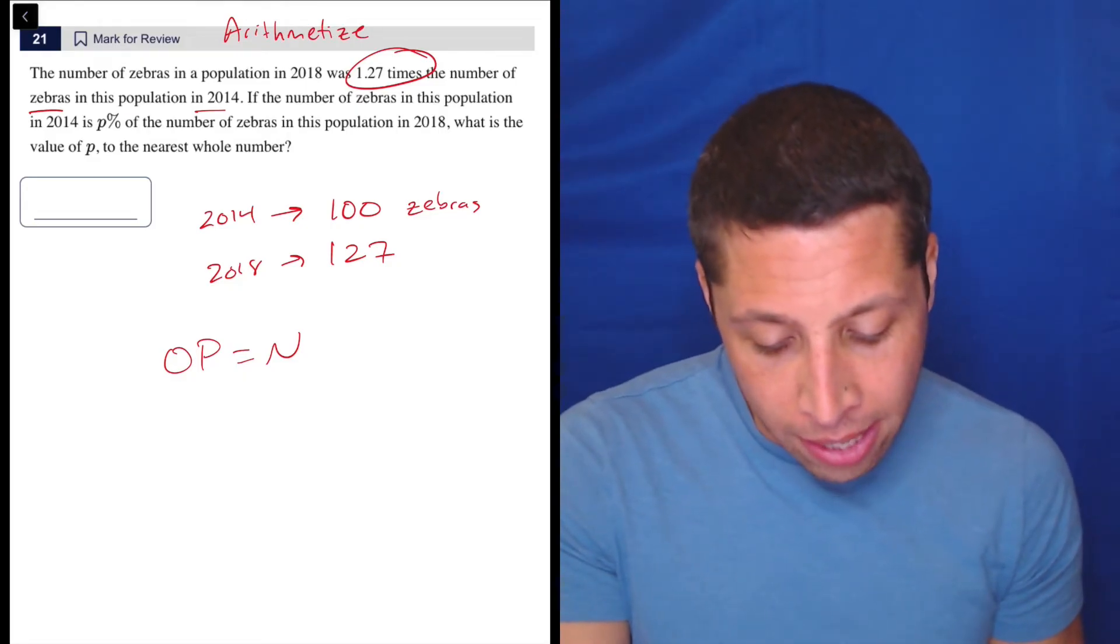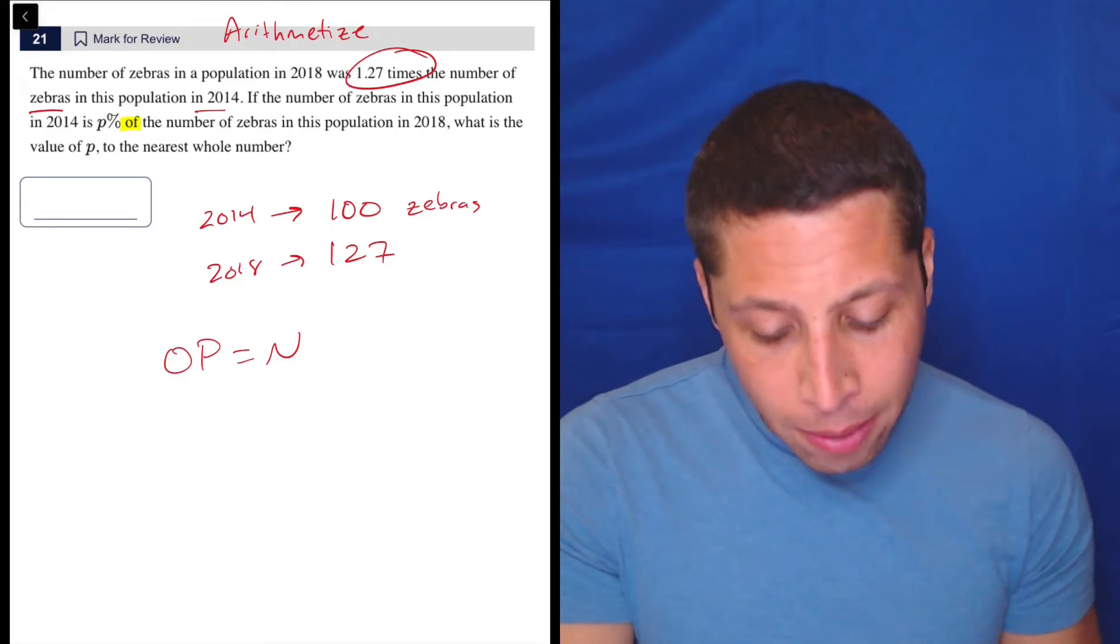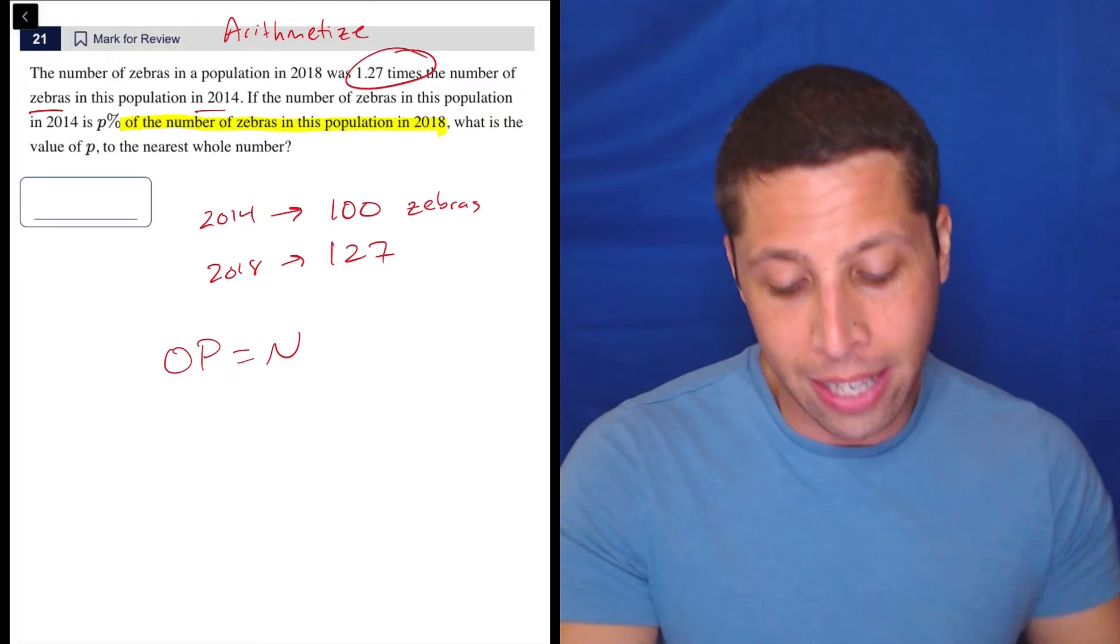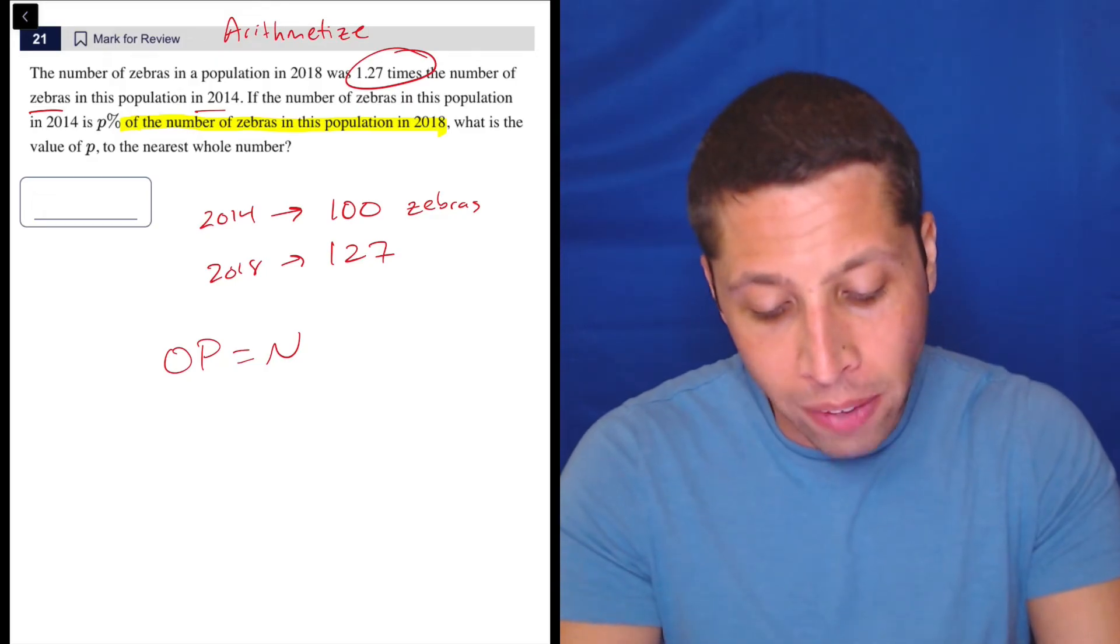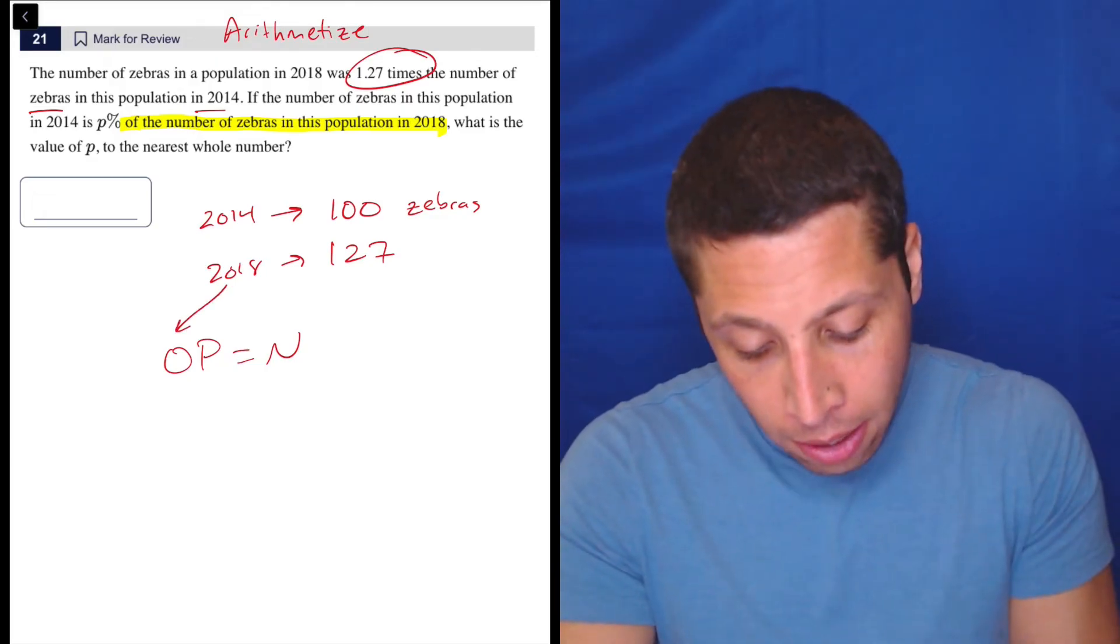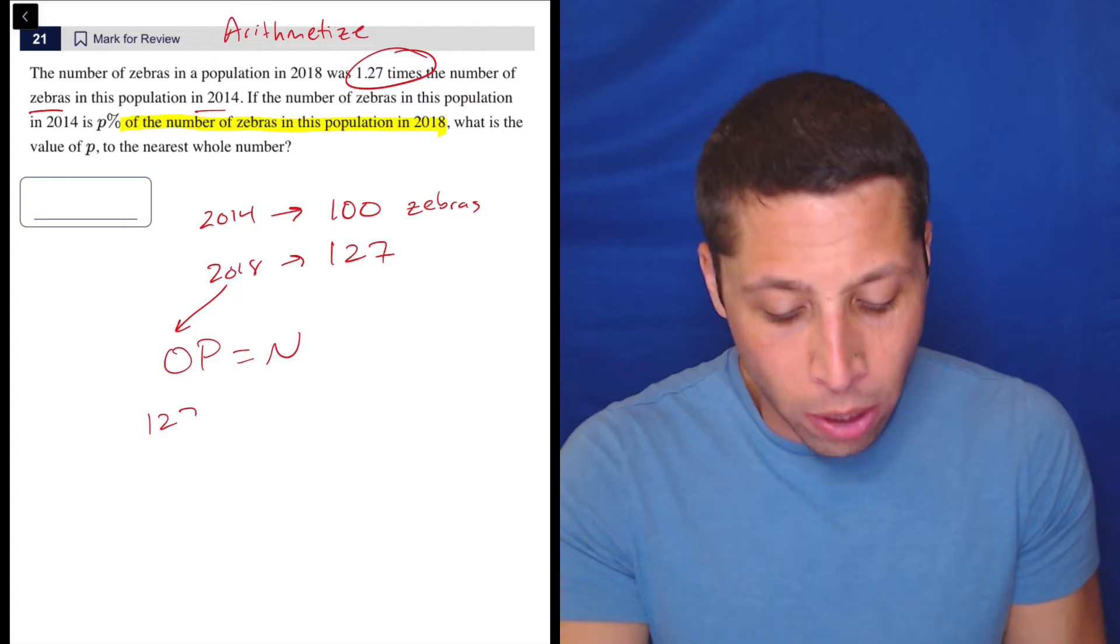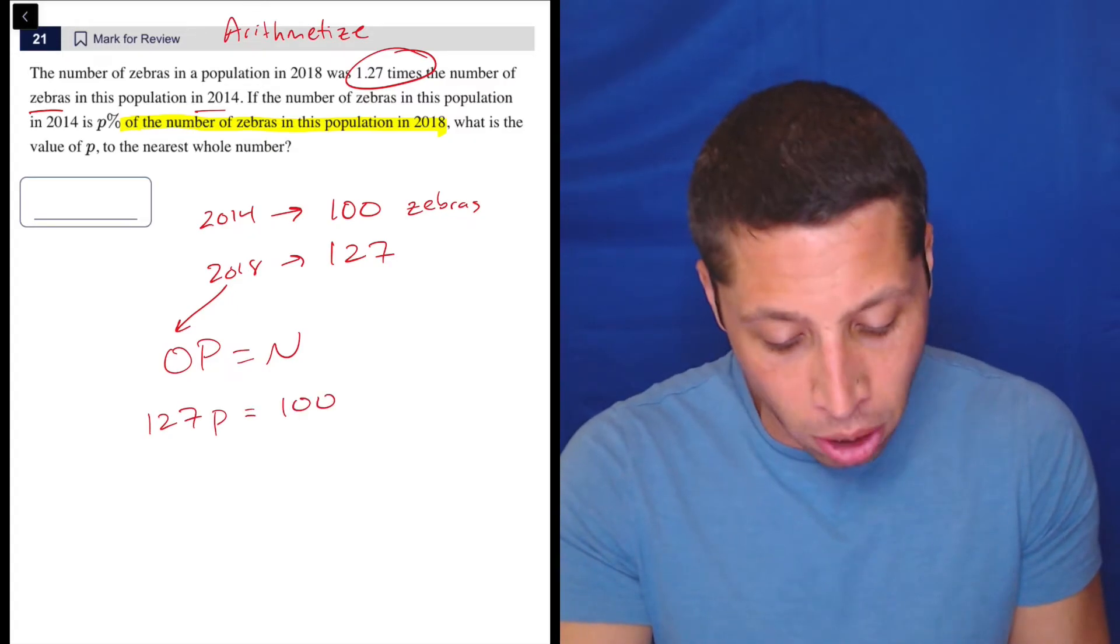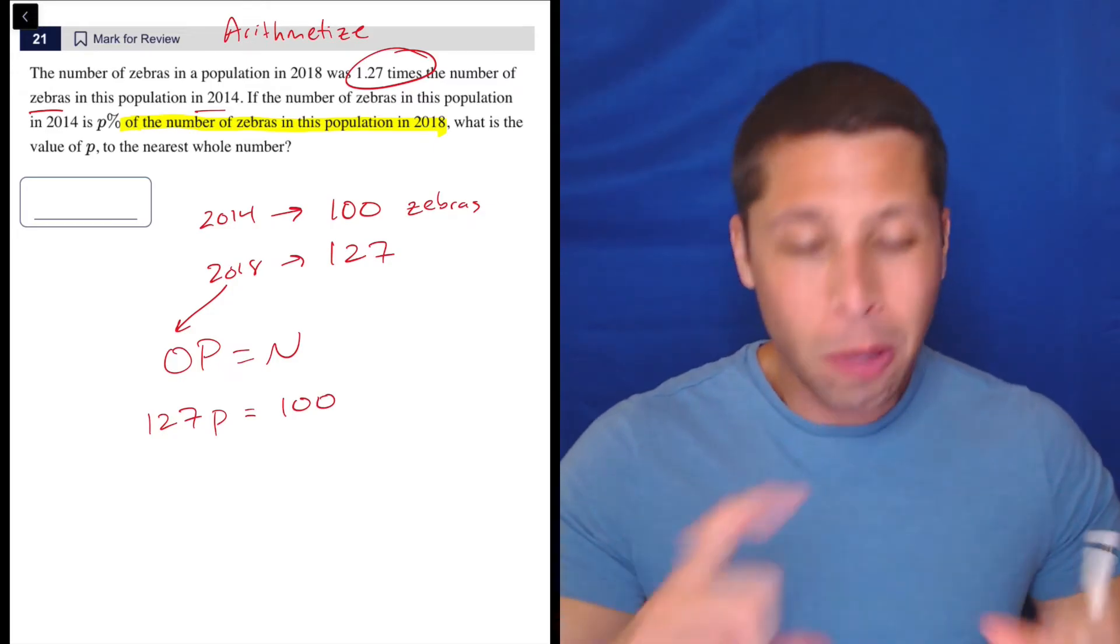The key piece is the of. That's pointing me to my original value. So of the number of zebras in the population in 2018, that's telling me my original value is actually the 2018. So 127 times p is equal to, in this case, our new value, which is a hundred. So it's backwards.